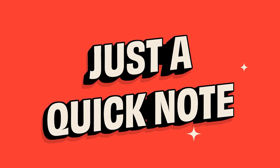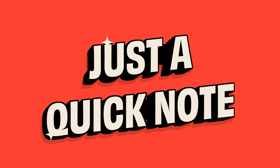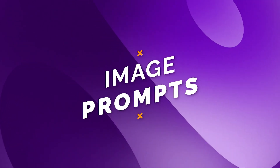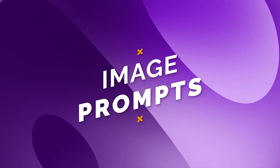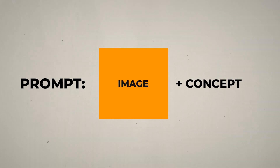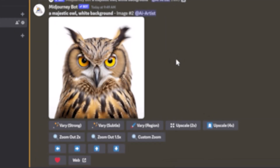The same rules should mostly apply to all models. So, to get started, let's have a look at image prompts. With image prompts, it allows you to use images as part of the prompt to influence a job's composition, style, and colours. Image prompts can be used alone, or with text prompts.